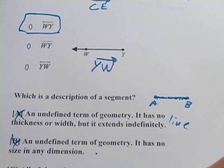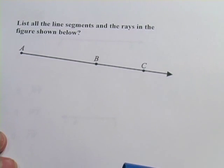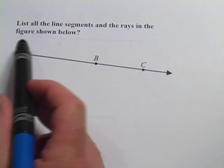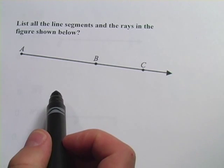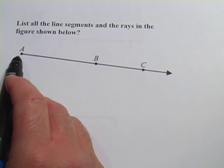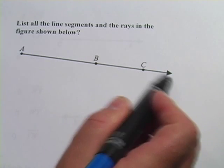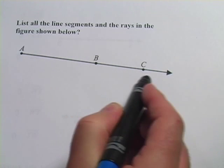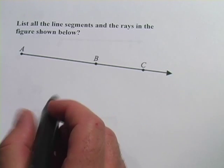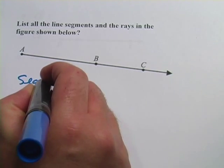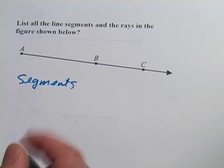All right, we're going to try one more here. This one says list all the line segments and all the rays in the figure shown below. So we've got this ray, big ray, that starts at letter A and goes out past B and C and keeps going on forever in that direction. And they want us to list the segments and the rays.